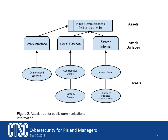Another key asset is all of the public communications that CTSC produces. These are in the form of our web page, Twitter feed, and blog. Again, the attack surfaces were identified and put on the diagram. These were web interface, local devices, and server internals. Any of these assets might be breached by a compromised user credential via the web interfaces they provide. Another example might be someone using OnePass on one of their Apple devices — if this device is lost and compromised, access would be gained.